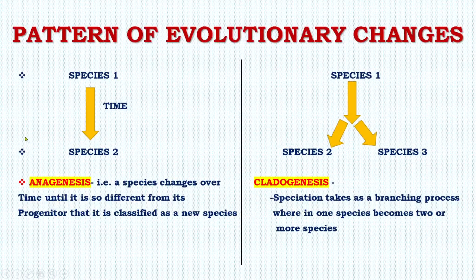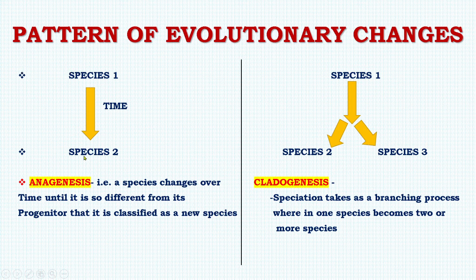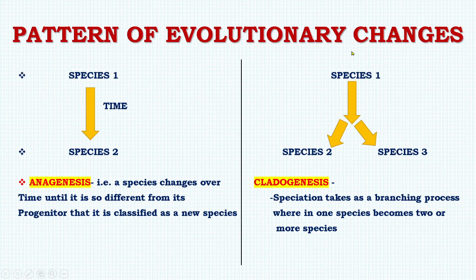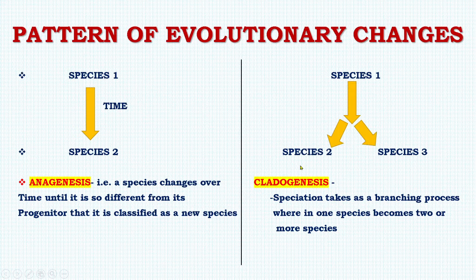In anagenesis, a species changes over time until it is so different from its progenitor that it is classified as a new species — species one changes into species two over time. In cladogenesis, species one differentiates into two or more species, meaning speciation takes place as a branching process wherein one species becomes two or more species. This is the key difference between anagenesis and cladogenesis. That covers all the patterns of evolution.